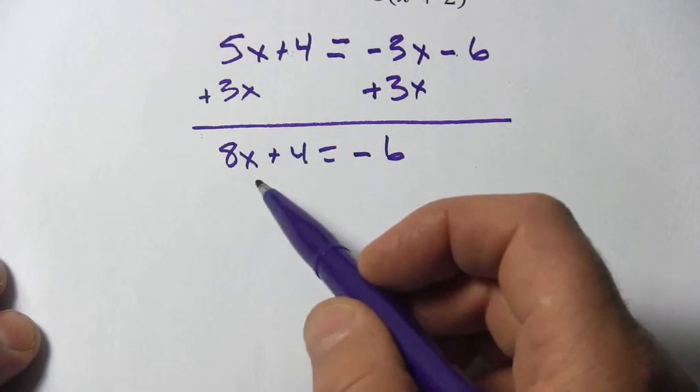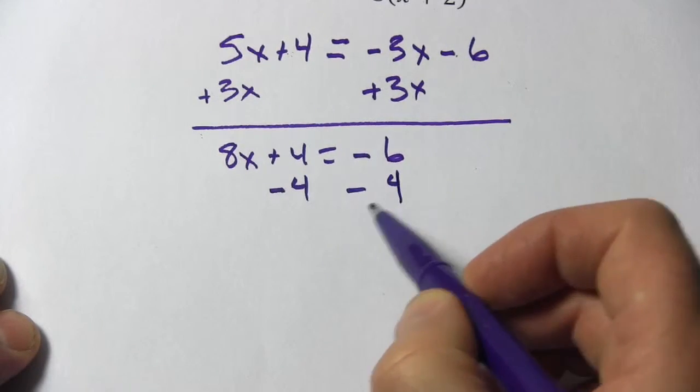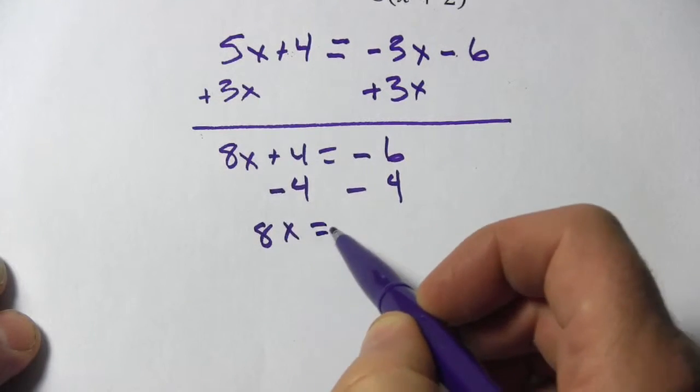So I can go forward getting the x term alone by getting rid of this 4. I'm going to subtract 4 from both sides so I get 8x equals negative 10.